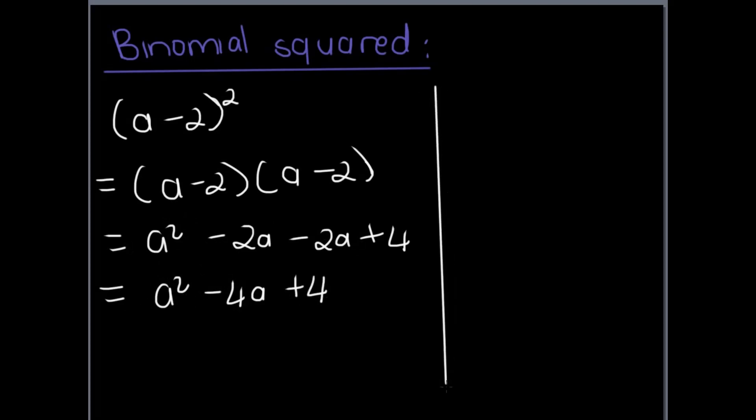The other way we can do it is some of you learned the SDS method. That stands for square double square. So we first take the first term and we square it and we get a squared. Next we take these two terms and multiply them together which is minus 2a and then we double it to get minus 4a and then we square the last term which is plus 4. So if you aren't comfortable with SDS yet you can use the longer FOIL method but if you do know SDS it's quicker in your exams and you can just do it that way.